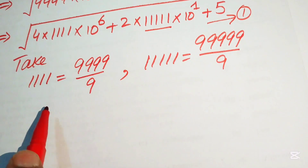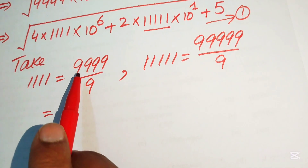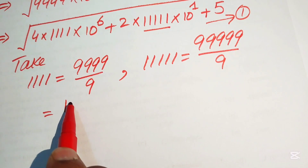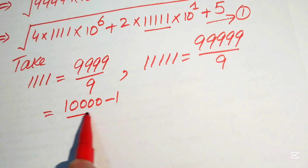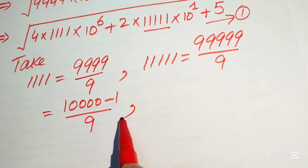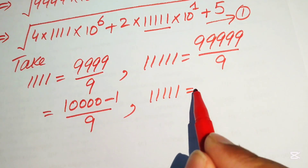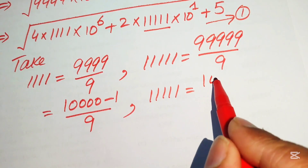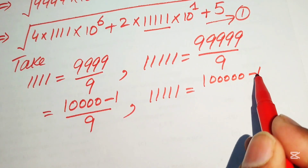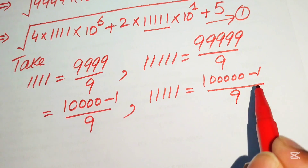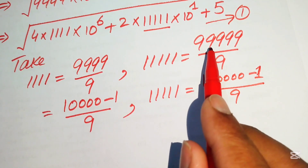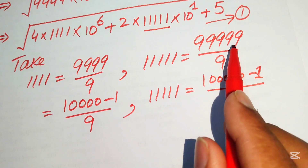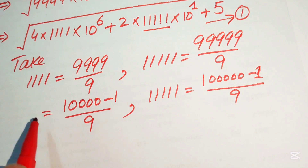Call this equation 1. We rewrite 9999 as (10,000 − 1) divided by 9. Similarly, the 5-ones repunit equals (1,00,000 − 1) divided by 9. When you compute 1,00,000 − 1 you get 99,999 divided by 9.